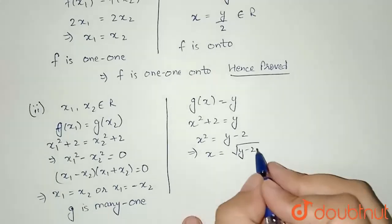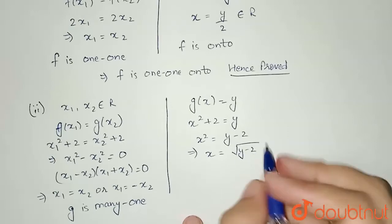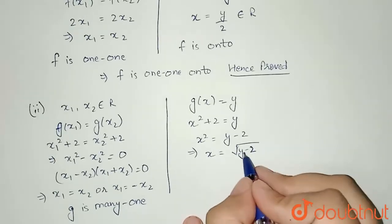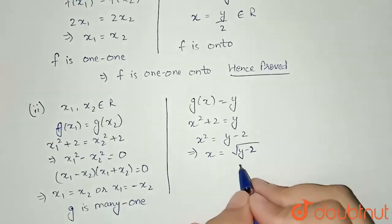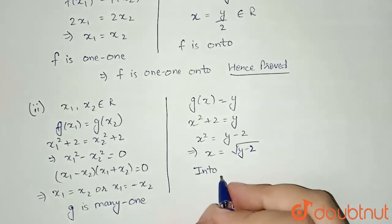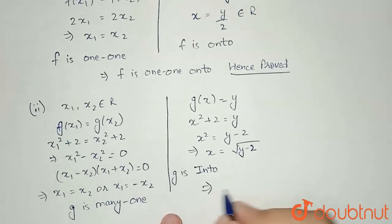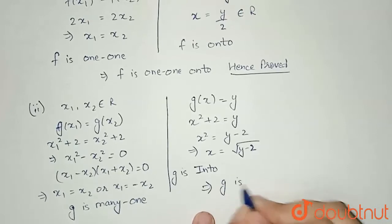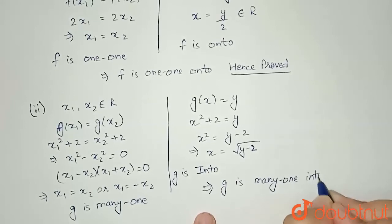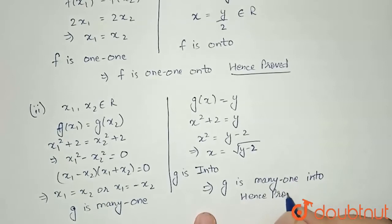So for all x we will not get every value of this function. Since y is always a real number, I will get negative also under root, so what I can say according to this is that my function will be into. So I can write g is into. So what I can write finally is that g is many-one as well as into, hence proved that g is many-one into.